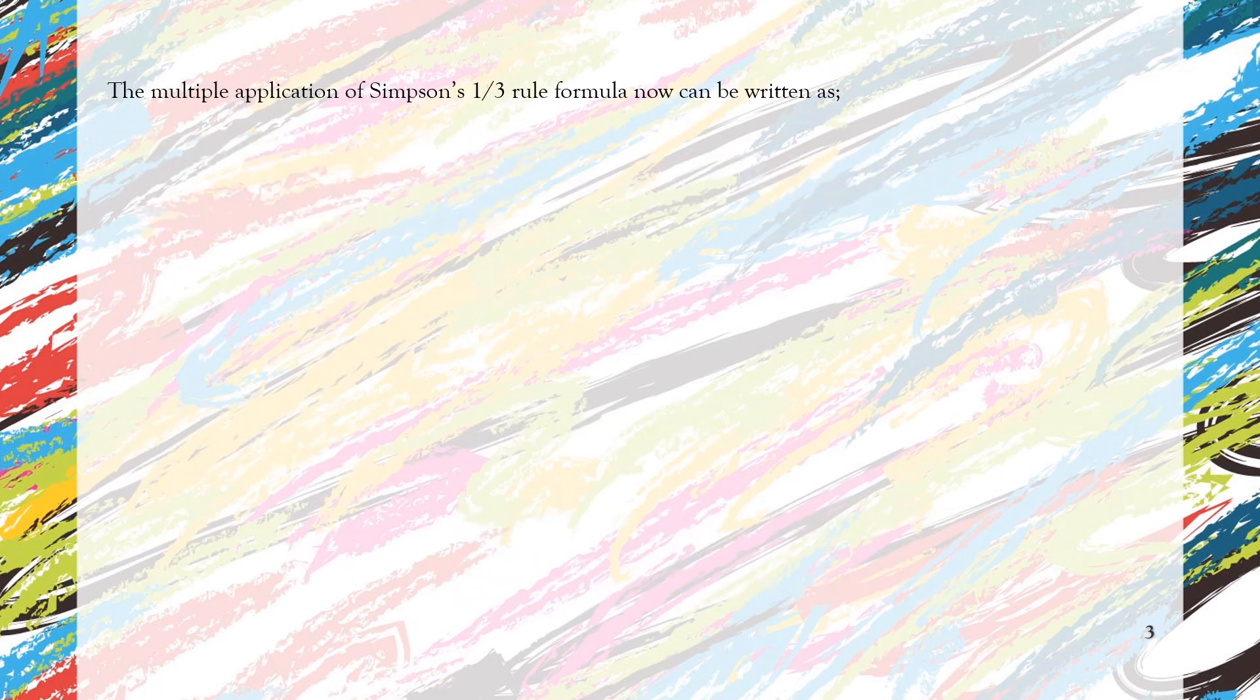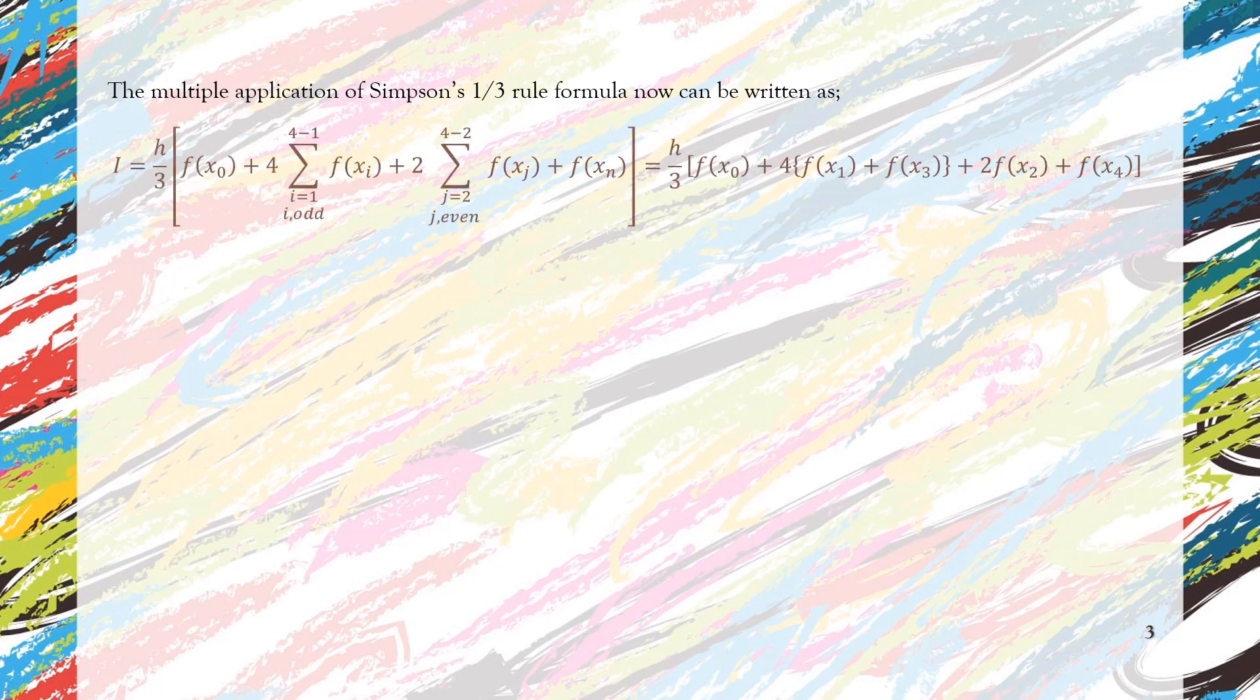Now we can rewrite the Simpson's 1/3 rule with multiple application to suit the number of segments that we have. We have four segments and we have five points, so we have that equation which includes f(x₀) until f(x₄).